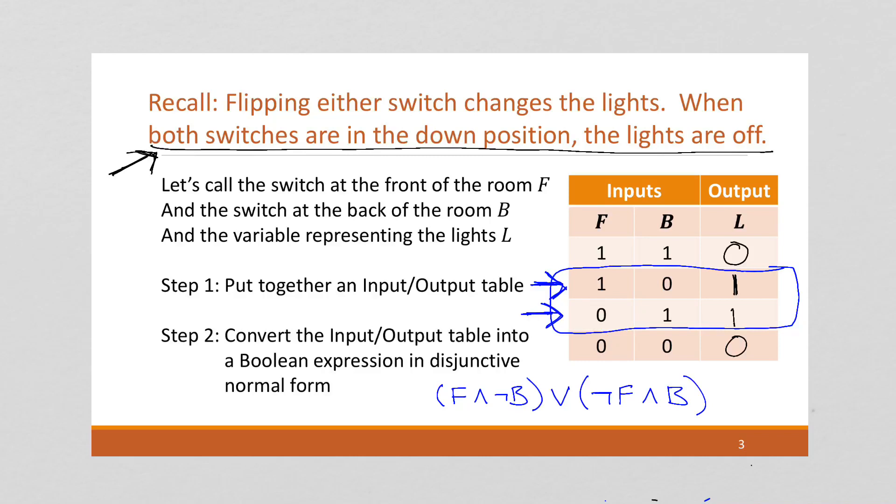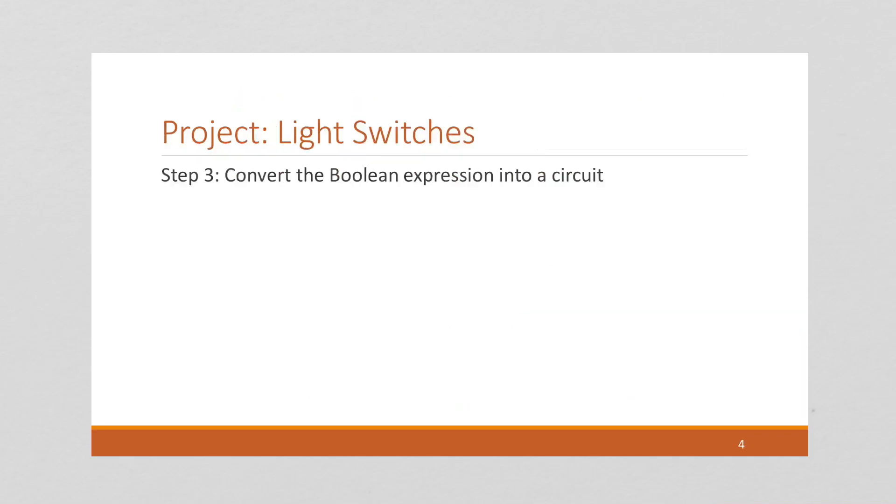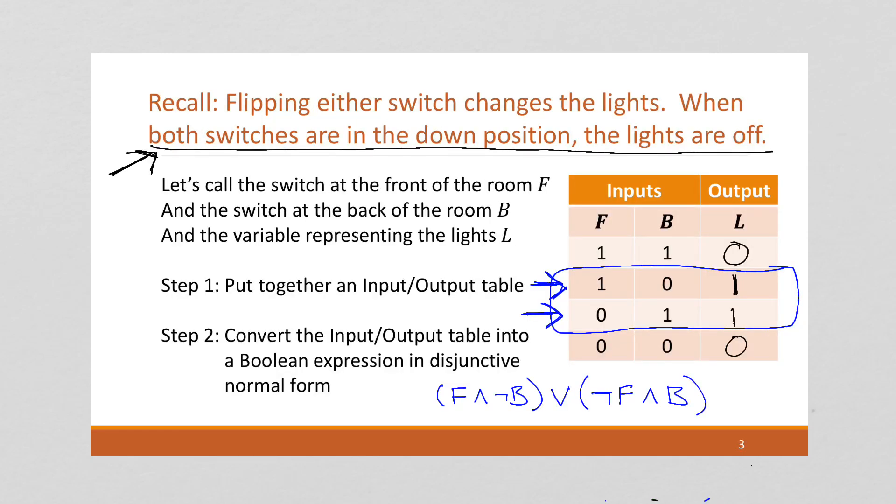So here's a Boolean expression that goes with this input-output table. And finally, we need to create a circuit for this. So I'm going to go back. We want F and not B, or not F and B.